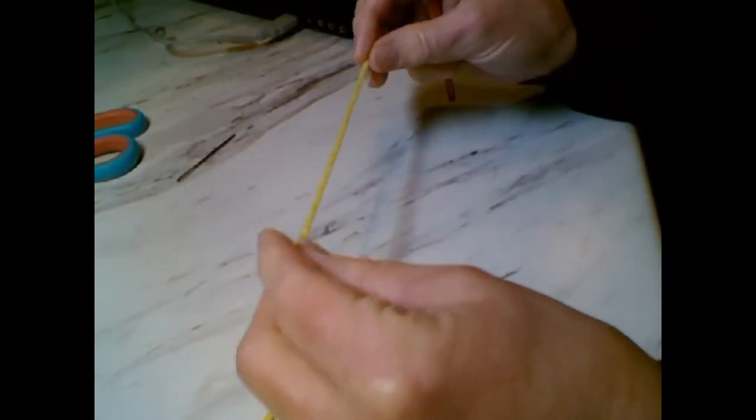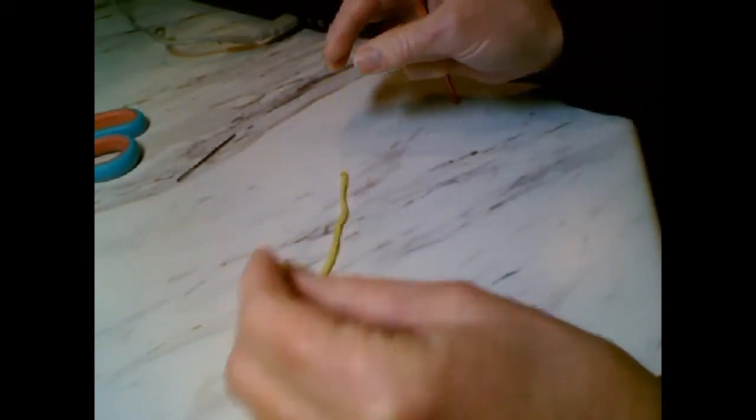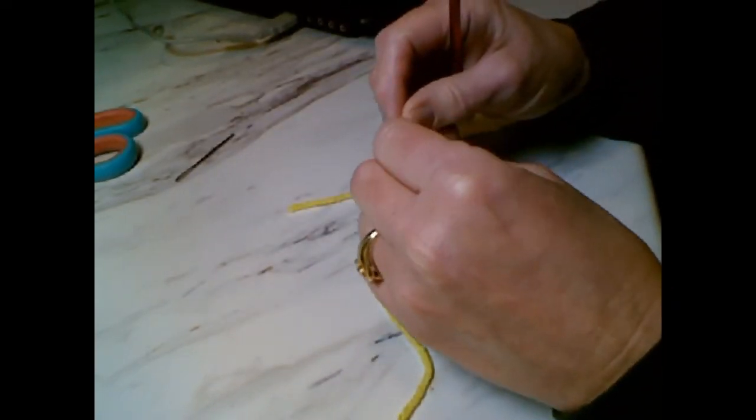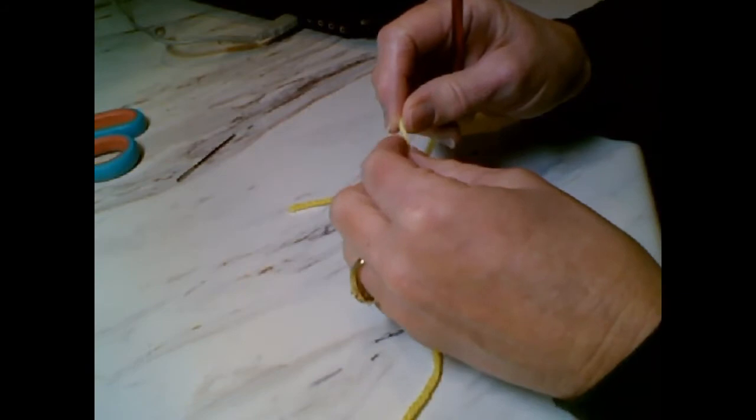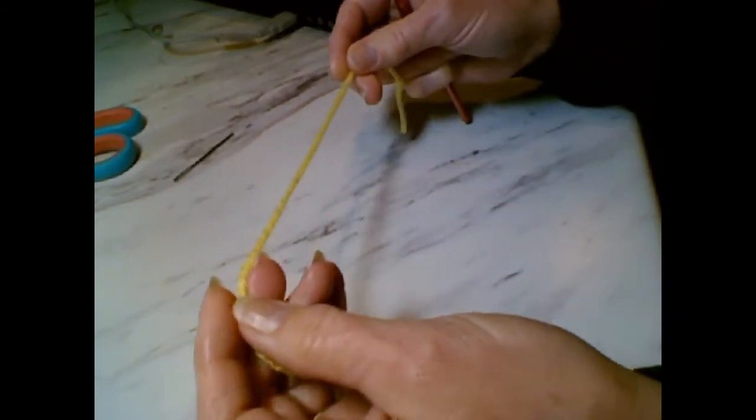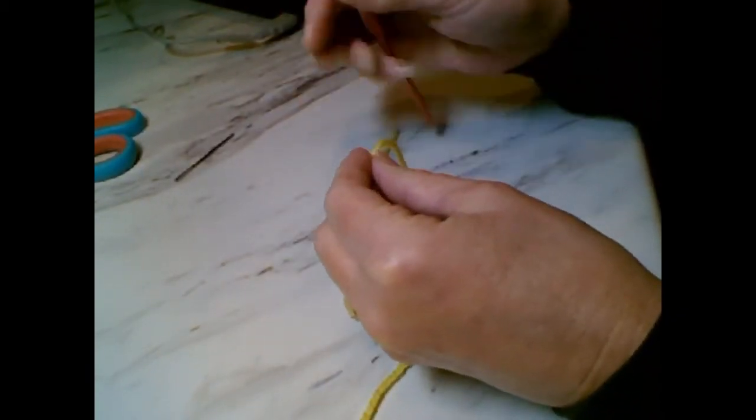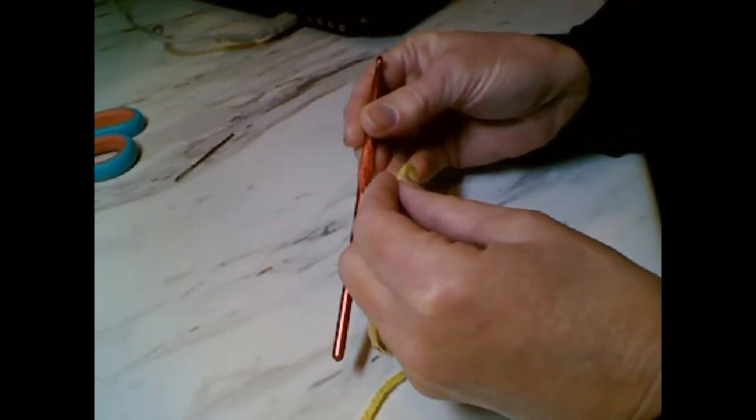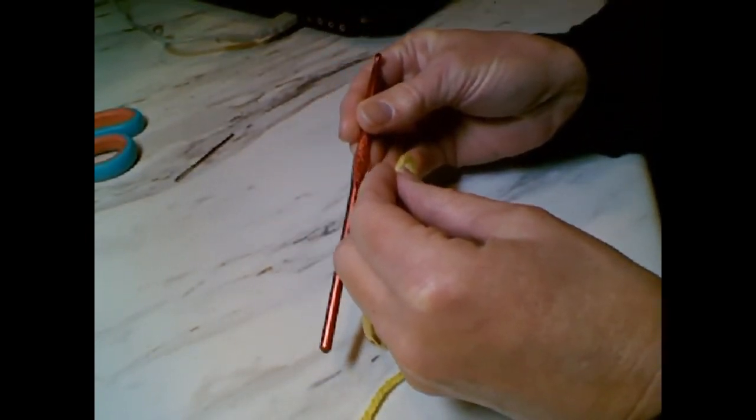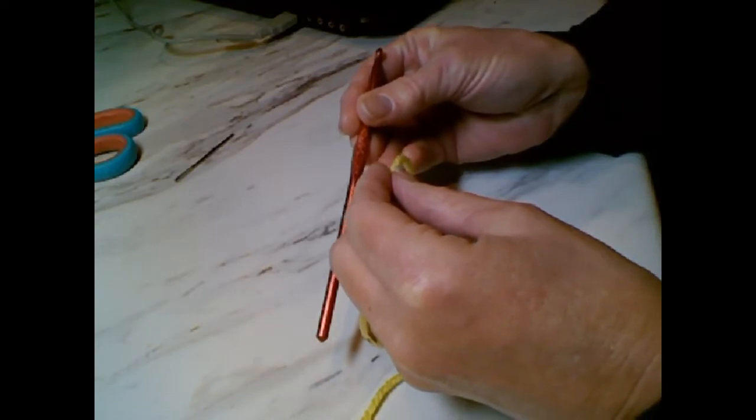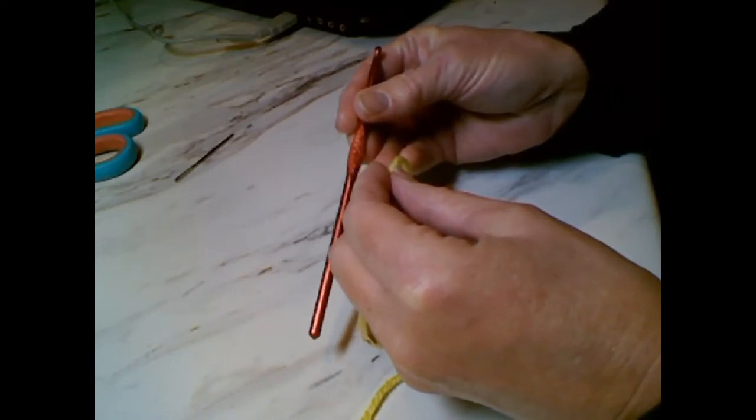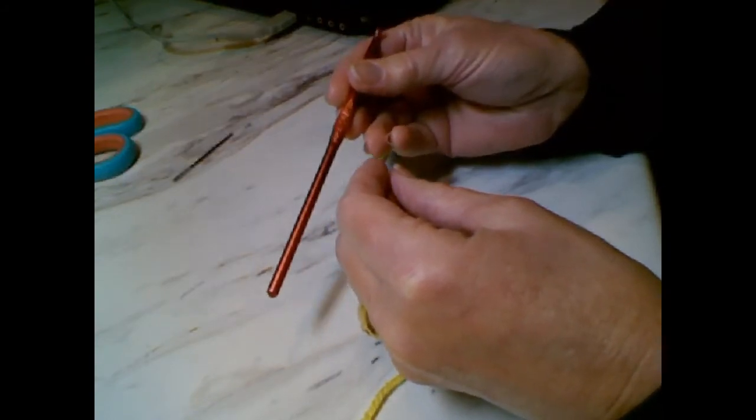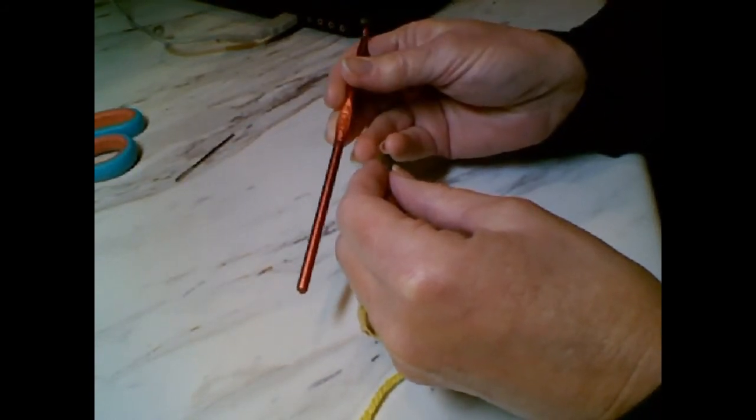Right now I'm using just a regular number four weight yarn in yellow. Beaks many times could be orange or yellow, but I'm going to be using this. To start with, I'm also using an H crochet hook. It could be any size hook that you wanted to get the effect that you wanted. You could use whatever yarn you wanted also, but in this case I have the number four medium weight yarn with the H crochet hook.